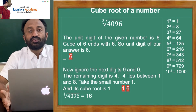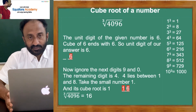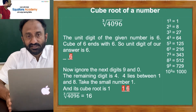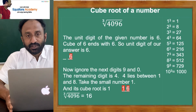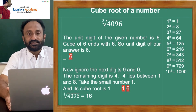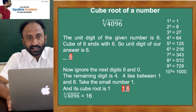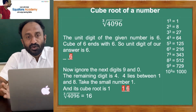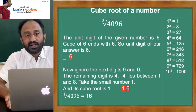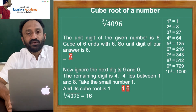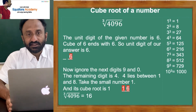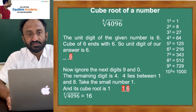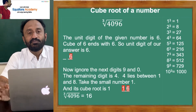Cube root of 4096. What is the first step? Take the digit at the unit place — that is the last digit, which is 6. Check the cube of the number which ends with 6. 6 cube is 216. So the unit place of our answer will be 6. Put 6.